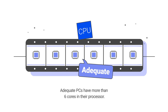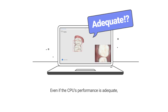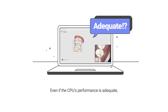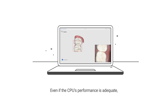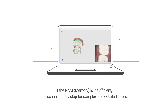Adequate PCs have more than 6 cores in their processor. You can see a comparison table of processors with 6-plus cores from Intel and AMD's lineup. Even if the CPU's performance is adequate, if the RAM is insufficient, the scanning may stop for complex and detailed cases.